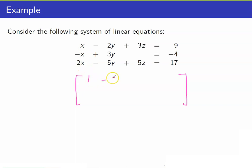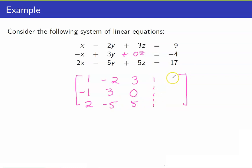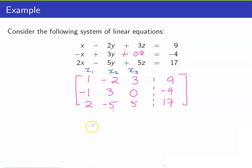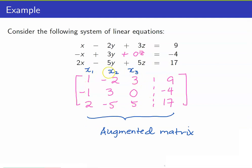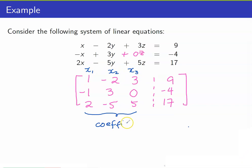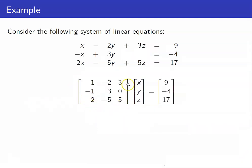Next, we will record the coefficients. In this case, we have 1, negative 2, 3, negative 1, 3, 0 — because the coefficient of z here is equal to 0 — 2, negative 5, 5. Then I will form an augmented matrix with a dividing line to show the constants. This gives us the coefficients for x1, x2, x3, and our constants over here. This is called the augmented matrix. If you are just interested in the matrix containing all the coefficients, you call that the coefficient matrix.